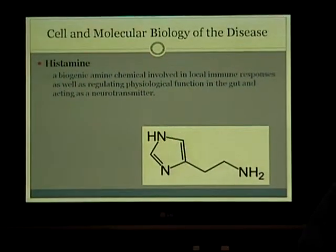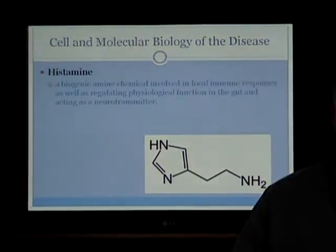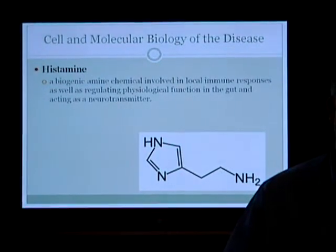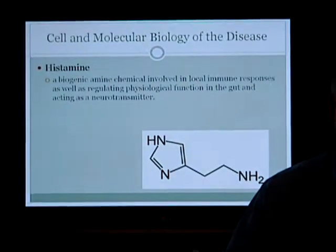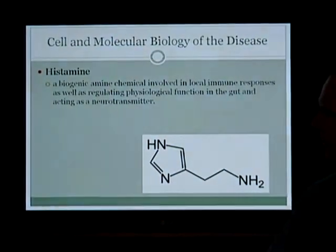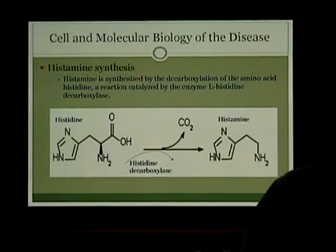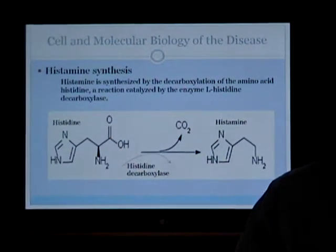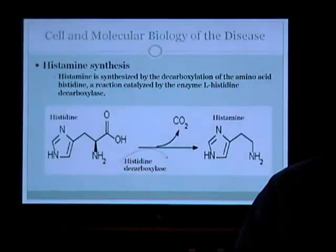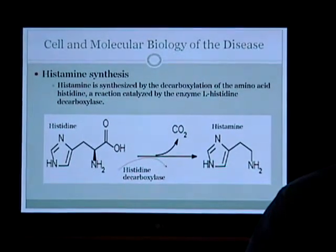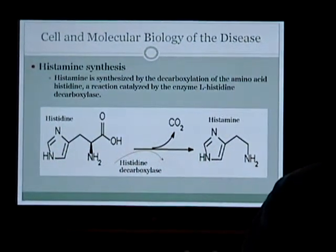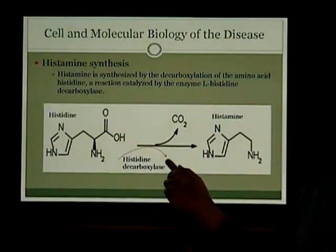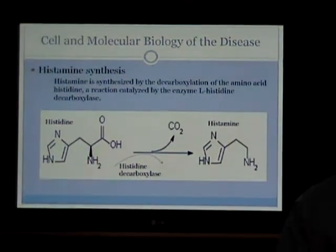So what is histamine? It is a biogenic amine chemical involved in local immune responses, as well as regulating physiologic function in the gut, and it also acts as a neurotransmitter. The synthesis of histamine is done by the decarboxylation of the amino acid histidine, a reaction catalyzed by the enzyme L-histidine decarboxylase. As you can see from the graph, we start with histidine, histidine decarboxylase comes in, removes carbon dioxide, and you end up with the final product.